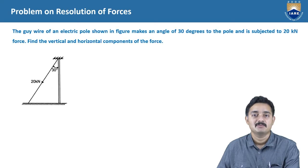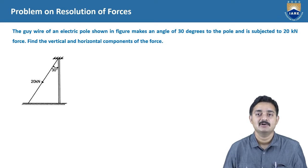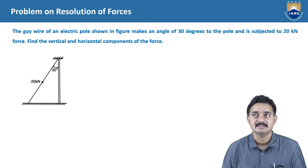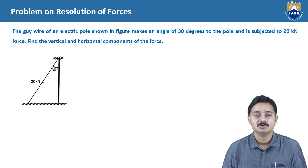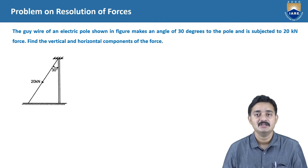Let us solve a problem on resolution of forces. The problem given is: the guy wire of an electric pole shown in the figure makes an angle of 30 degrees to the pole and is subjected to a 20 kN force. Find the vertical and horizontal components of the force.